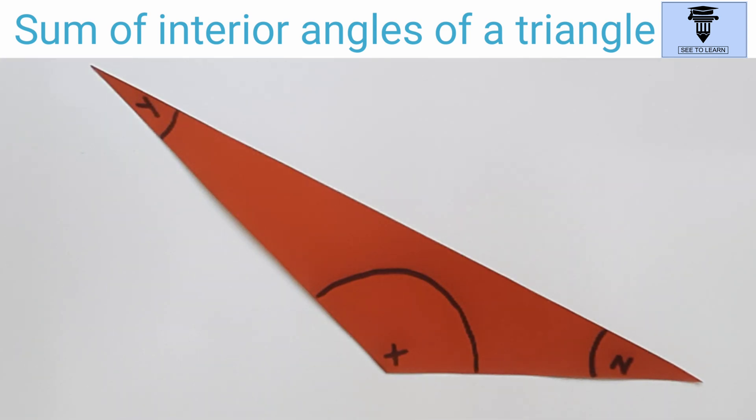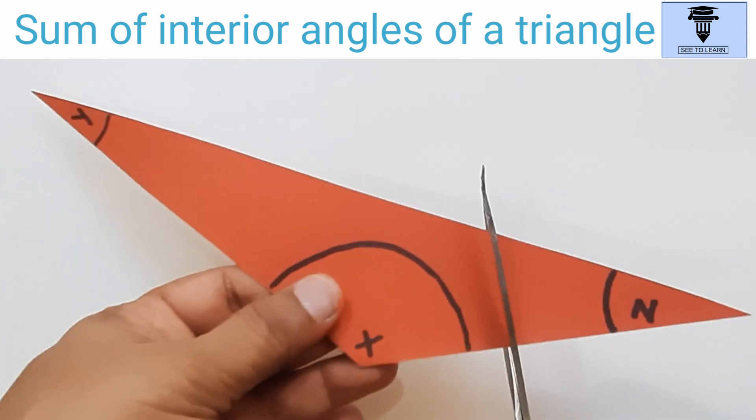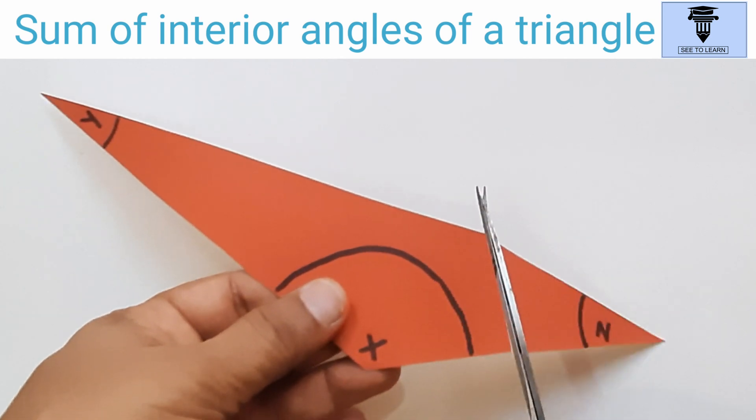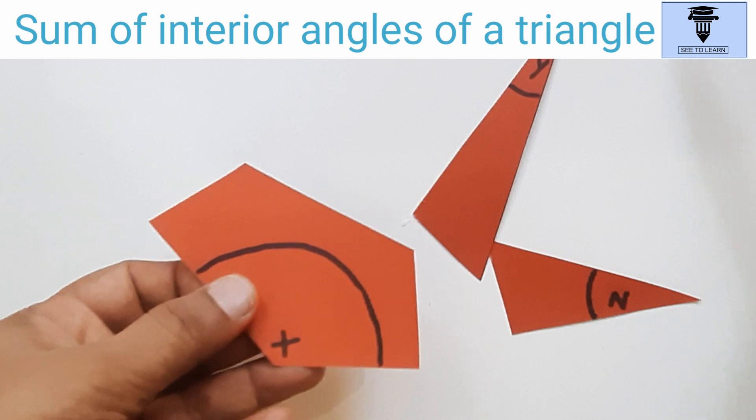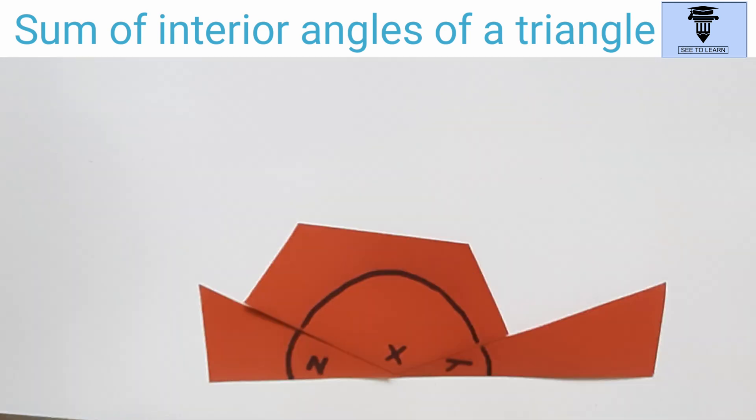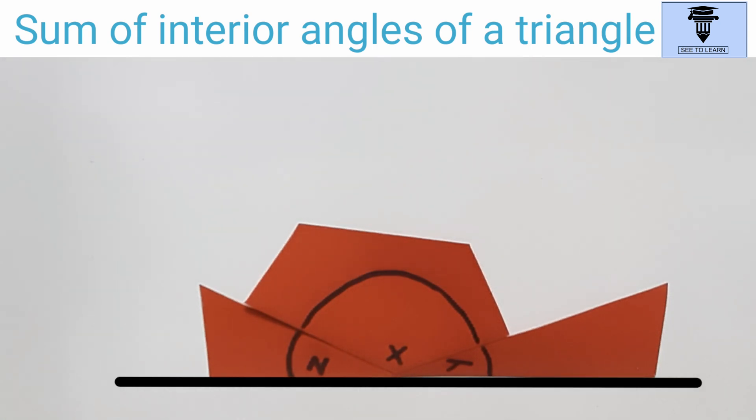Here we take another triangle and cut its angles X, Y and Z and place them in the same manner. What do we find? They too form a straight line.